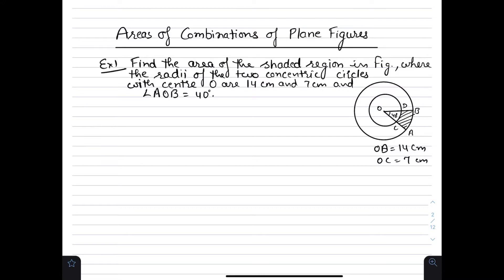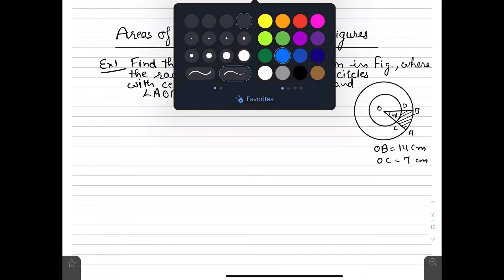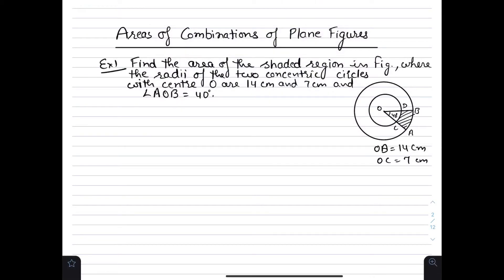First example: Find the area of the shaded region in the figure where the radii of two concentric circles with center O are 14 cm and 17 cm, and angle AOB is 40 degrees. So, angle AOB equals 40 degrees, radius OB equals 14 cm, and OC equals 17 cm.